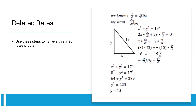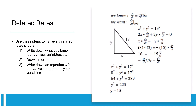Related rates problems involve finding the rate of change of one quantity in terms of another that is changing over time. We have a useful formula to nail every related rates problem. First, write down what you know. Second, draw a picture, if applicable. Third, write down an equation without derivatives that relates your variables, and don't plug in any variables yet. And then fourth, implicitly differentiate the equation, plug in your variables, and solve. An example problem is shown to the right.